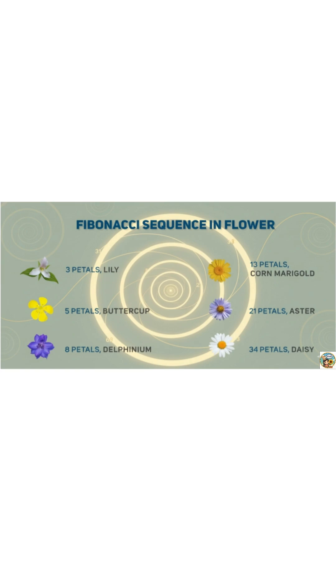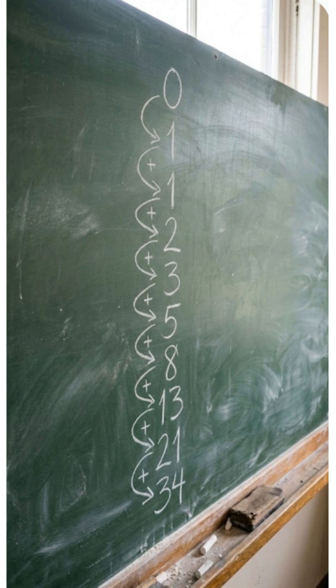So what is this Fibonacci sequence, or Fibonacci constant? The Fibonacci sequence is zero, one, one, two, three, five, eight, thirteen, twenty-one, and so on, where each number is the sum of the two before it.